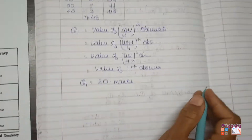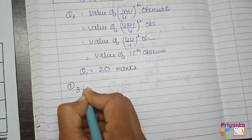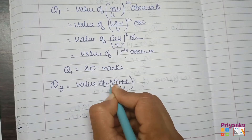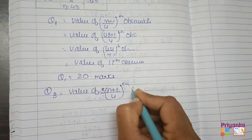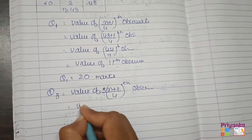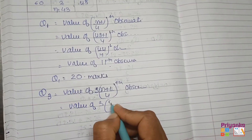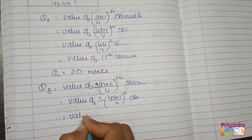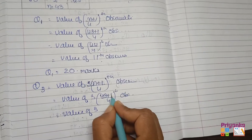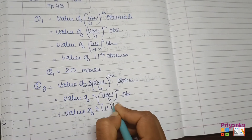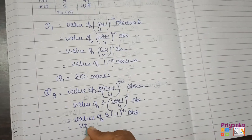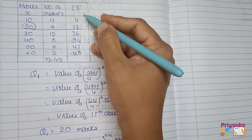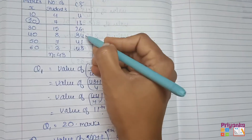Similarly, we find Q3: the value of 3(N+1)/4 = 3 × (43+1)/4 = 3 × 11 = 33rd observation. Going to the cumulative frequency column: 26 is not enough, but 34 covers the 33rd observation. So Q3 = 40 marks.